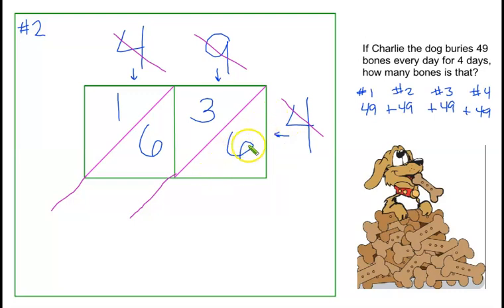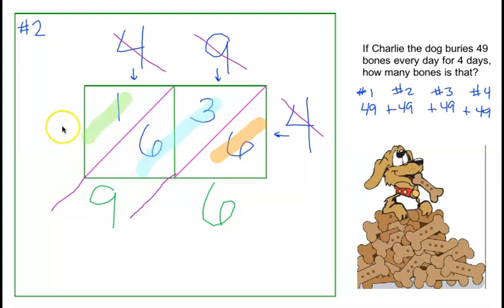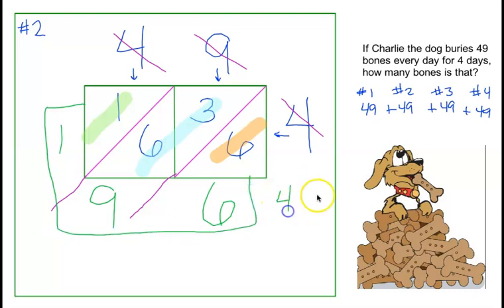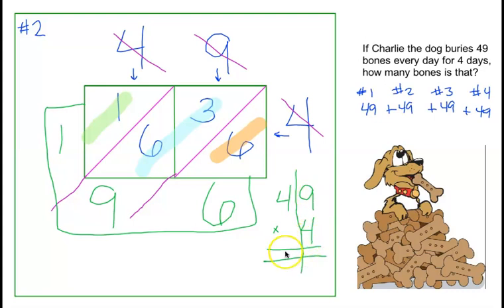Extend those diagonal lines. We are now done with the outside numbers — just looking inside. In the first diagonal column, I have a six, so I write six. In the second diagonal column, I have a six and a three — six plus three is nine. In the last diagonal column, I have one. So our answer is 196. The standard algorithm gives the same: 9 times 4 is 36, 4 times 4 is 16 plus the three is 19 — 196. Two different ways, same thing.